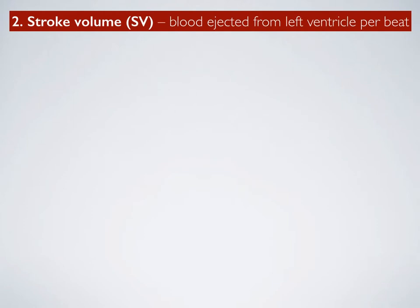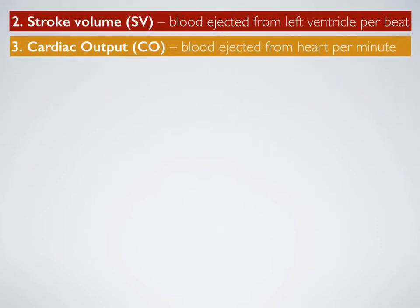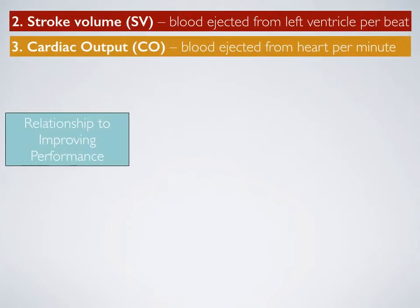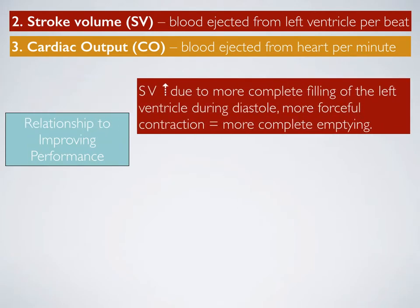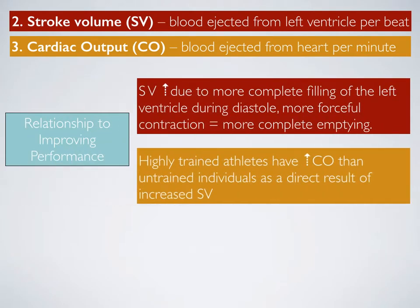Stroke volume refers to the amount of blood ejected from the left ventricle per beat, and cardiac output refers to the blood ejected from the heart per minute. They are both closely related, and also closely related to resting heart rate. Stroke volume actually increases as a result of training, and this is due to the more complete filling of the left ventricle and more forceful contractions that occur when the ventricle is emptying.